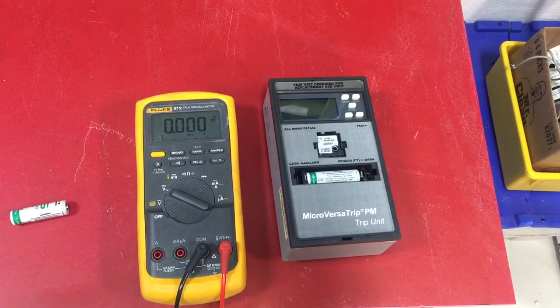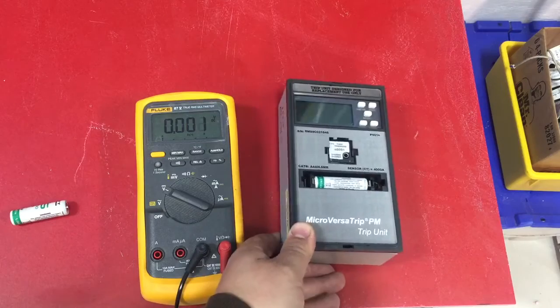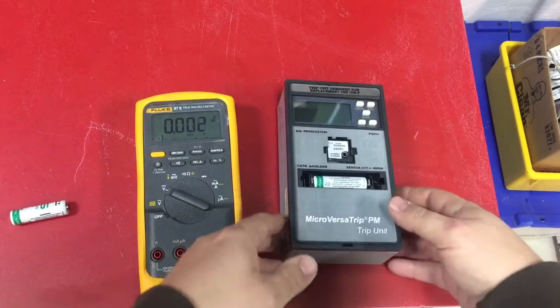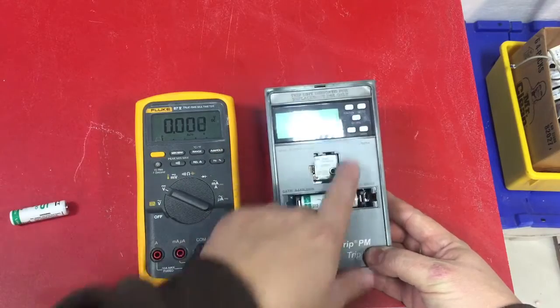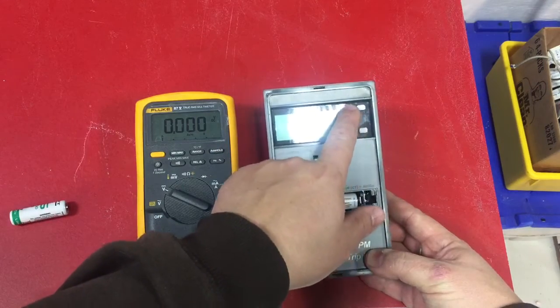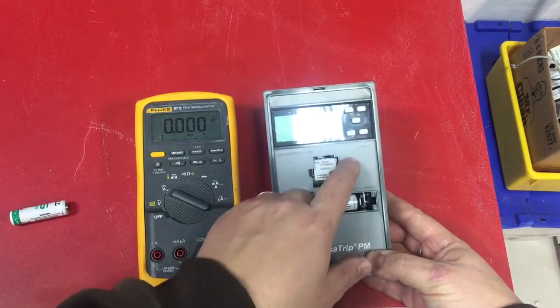Good morning. Here we are with a GE micro versatrip PM trip unit that we just got in. The problem with this one is the display won't come up. If you hit the battery button, the display should come up.